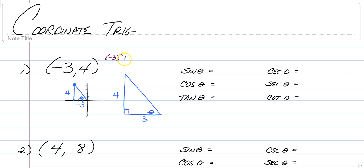We have negative 3 squared plus 4 squared is equal to c squared, and we get that our hypotenuse is 5. So sine is opposite over the hypotenuse, so our sine is 4 fifths. Cosine is adjacent over the hypotenuse, so we have negative 3 fifths. And tangent is opposite over adjacent, so we have 4 over negative 3. We don't have to put the negative on the bottom — that's just weird. You could put the negative on top or in front.